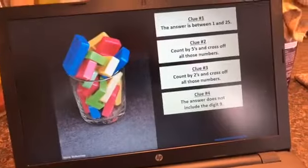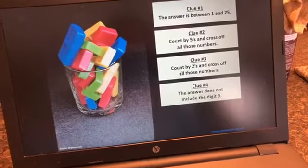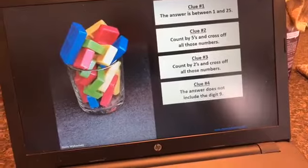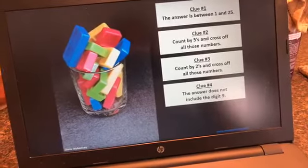You've got four clues. The answer is between 1 and 25. Count by 5s and cross off all those numbers. Count by 2s and cross off all those numbers. And the answer does not have the digit 9.